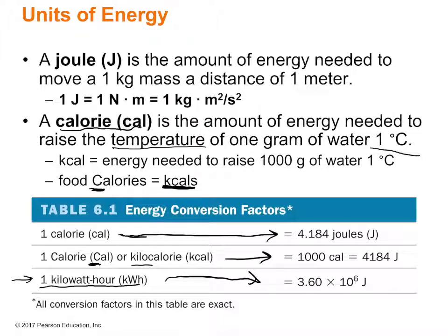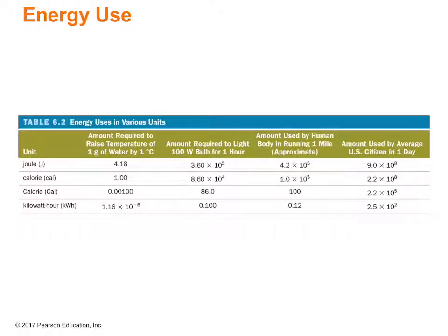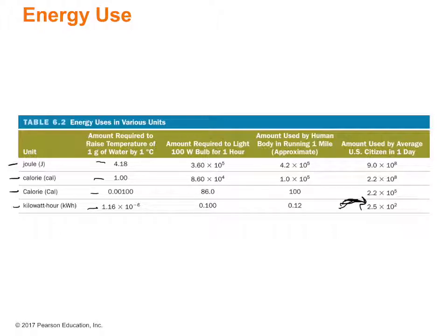Here is a summary of various units of energy: the joule, the calorie, the kilocalorie (uppercase calorie), and the kilowatt-hour. The amount of energy to raise one gram of water by one degree Celsius equals 4.184 joules, one calorie, 0.001 kilocalories, or 1.6 times 10 to the negative 6 kilowatt-hours. The average U.S. citizen uses about 2.5 times 10 to the second kilowatt-hours per day.